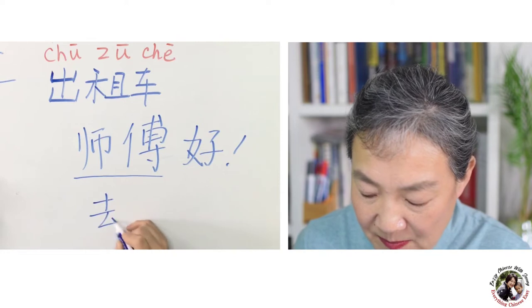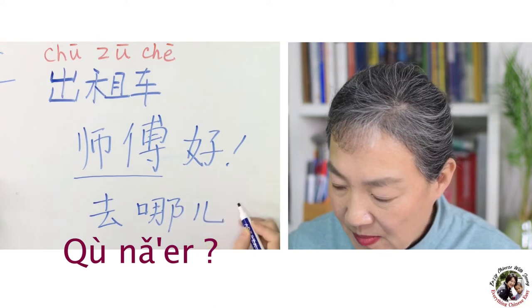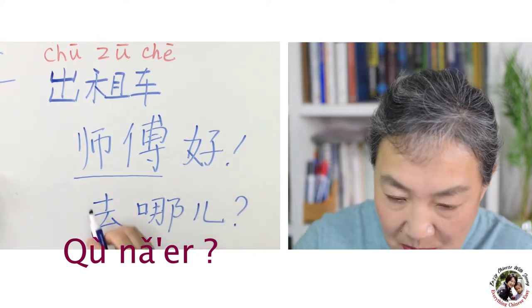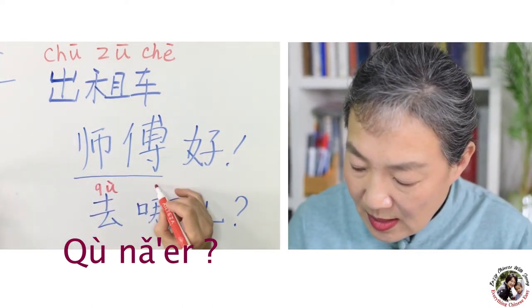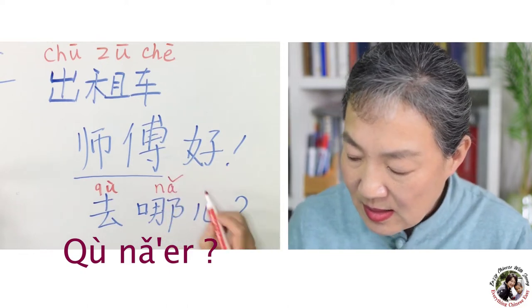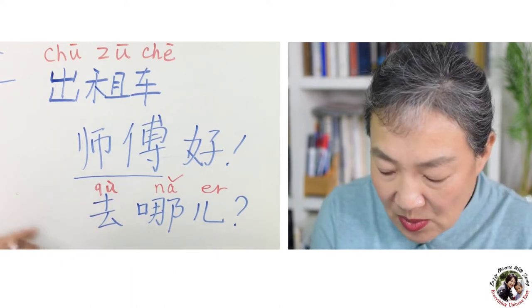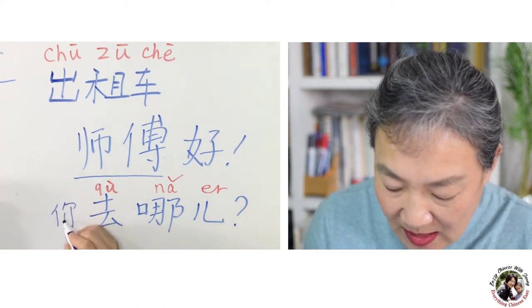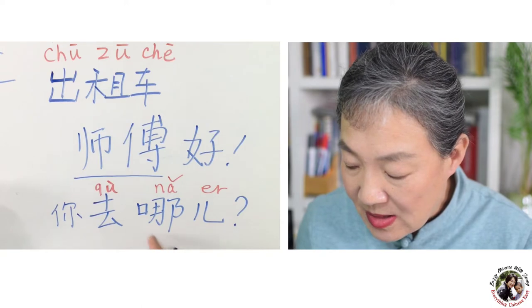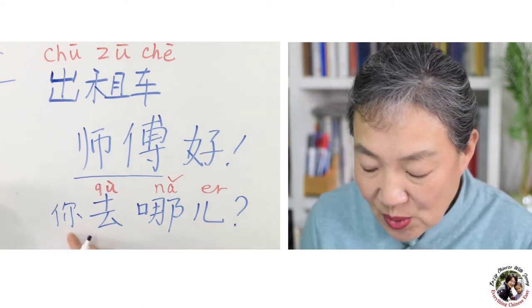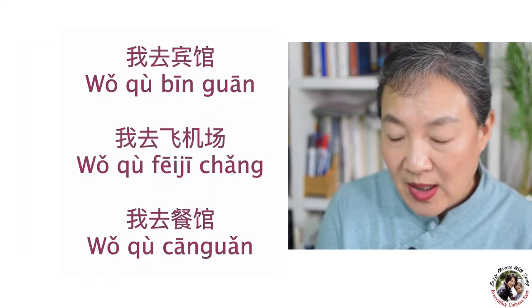The taxi driver may ask you 去哪儿? 去 means go, 哪儿 means where — so 去哪儿 means 'where are you going?' Or they might say 你去哪儿? — 你 means you, 去 is the verb, 哪儿 means where.